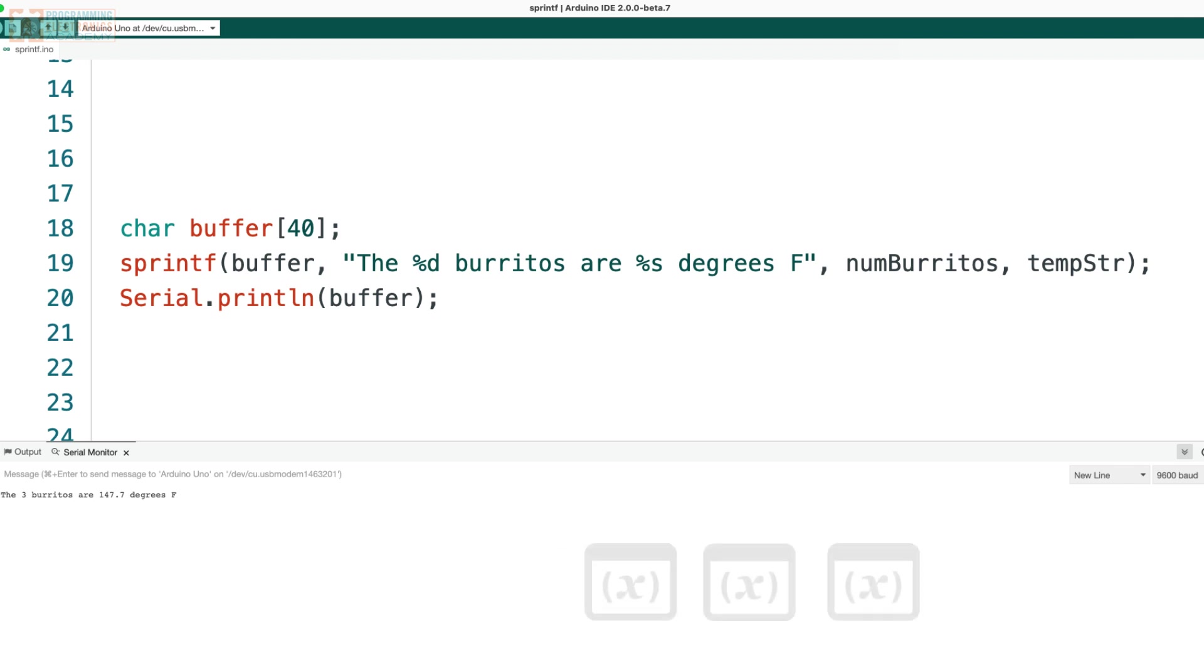If we ever want to go back and add more variables to the string, all we have to do is add the appropriate format specifiers and then the corresponding values to the sprintf function and we're good to go.